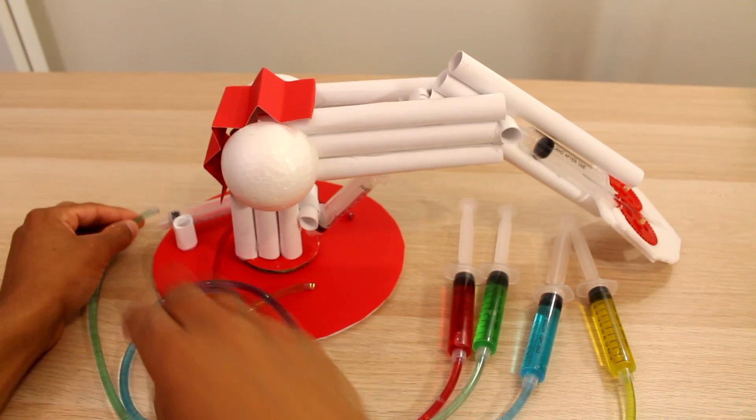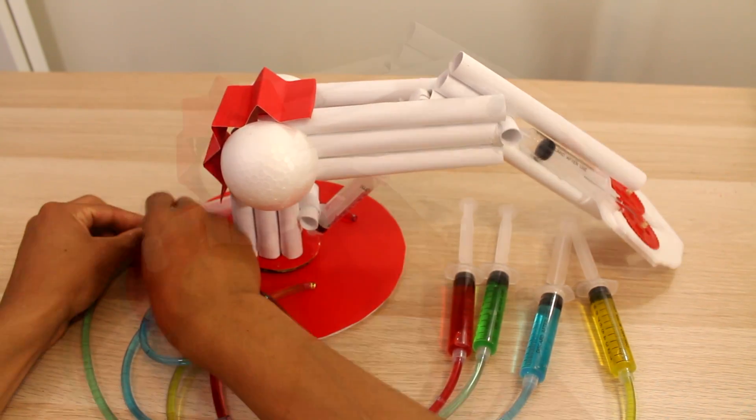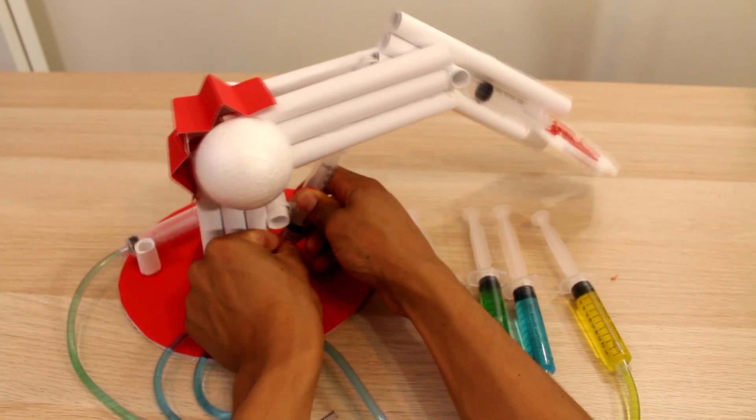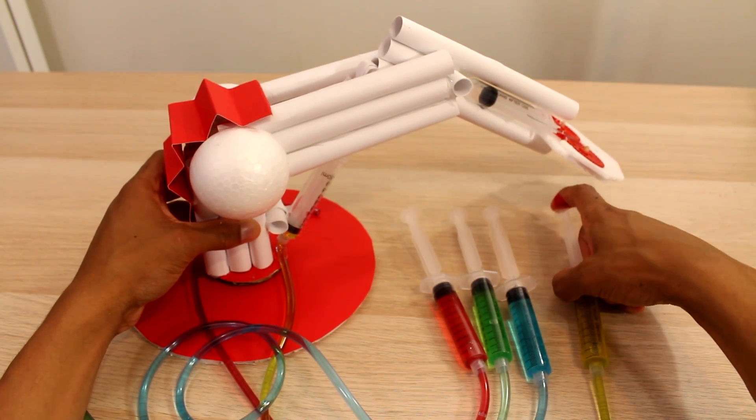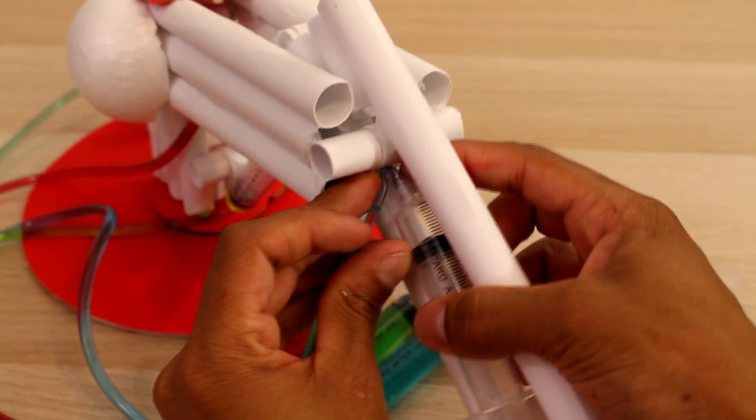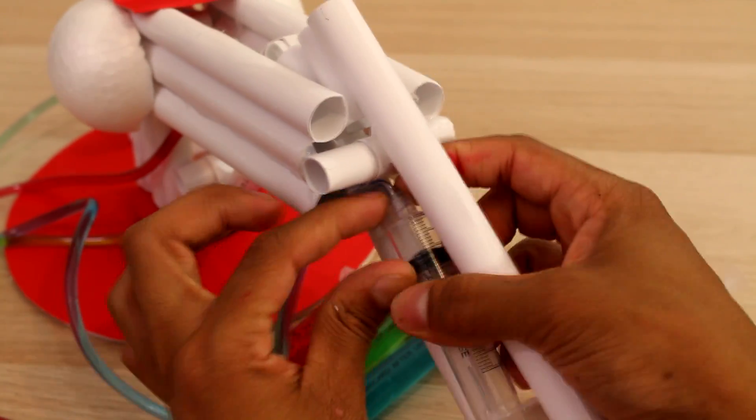And then once you have all your four syringes ready, you can go ahead and attach that to the syringes on the robotic arm. And then we can go ahead and do a quick test to make sure everything works well. And then squeeze everything into place.